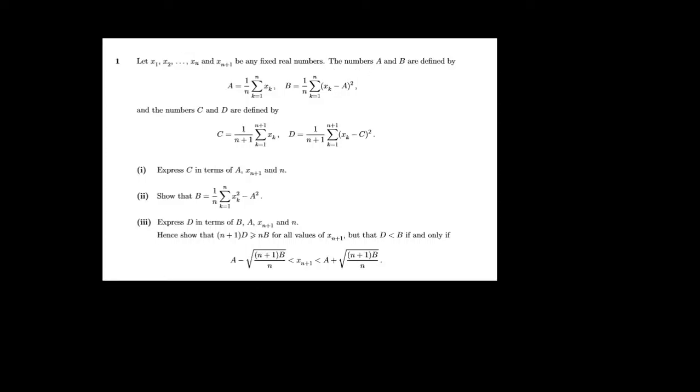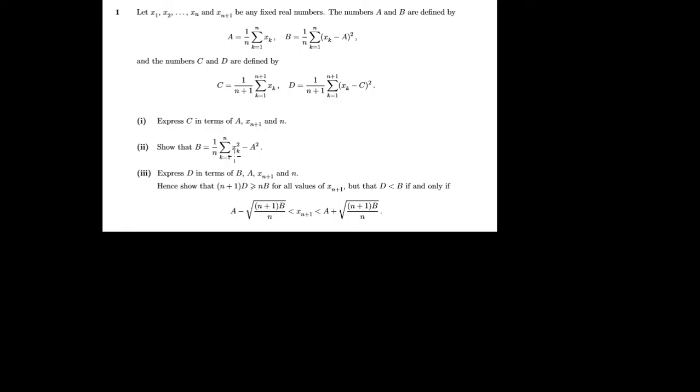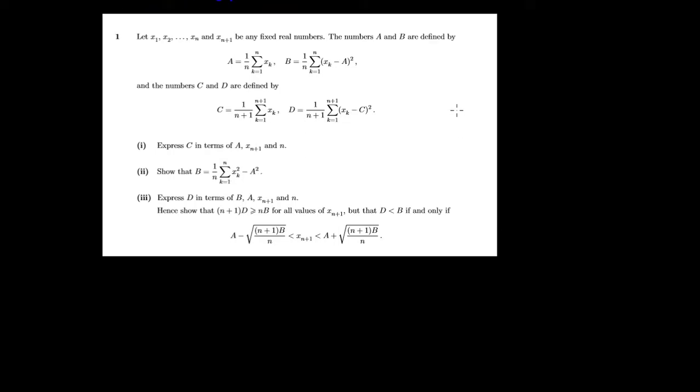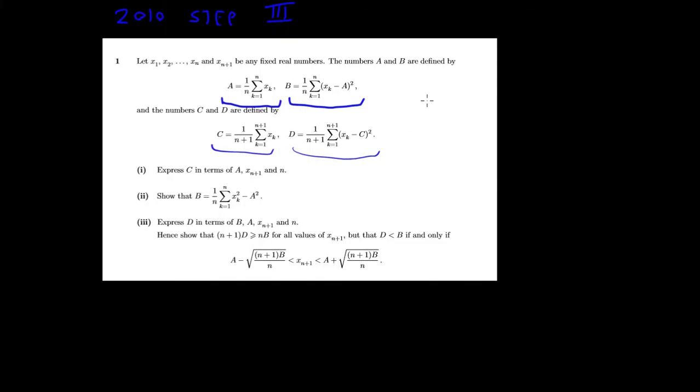Hi guys, today I'm going to try and explain to you question 1 from the 2010 step 3 paper. This has taken me a number of attempts to get this right. First step duration of video I've done in a while, so let's see how this goes. Notice that the question is asking you to link the arithmetic mean and variance of n fixed real numbers with the arithmetic mean and variance of n plus 1 fixed real numbers. If you have a bit of a look, you might realize that those expressions are the mean and the variance.